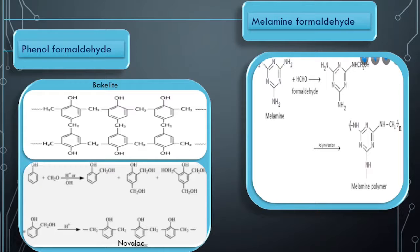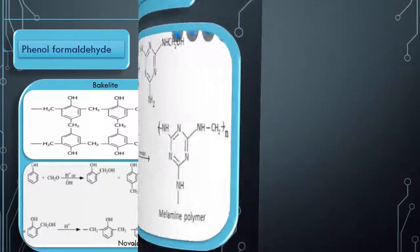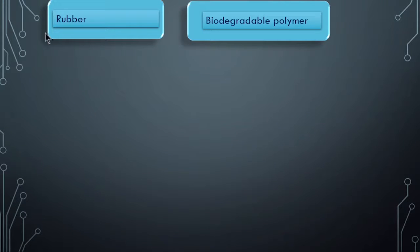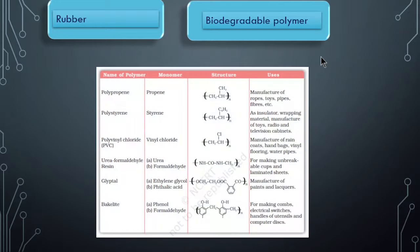We have almost covered more than three-fourths of the chapter just by summarizing these points. After this you will find topics like rubber, which can be classified as natural and synthetic. And biodegradable polymers - this is the end part of the book. There is a very important table, like urea formaldehyde - questions have been asked many times - and their uses are very important.